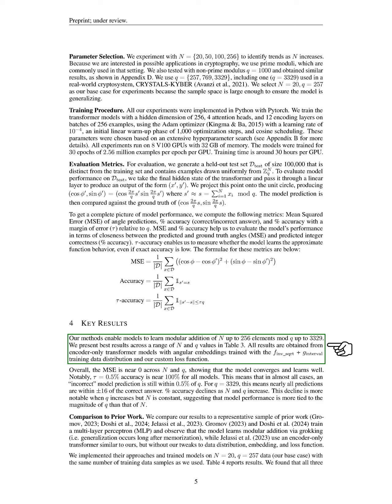Our key results show that our methods allow models to learn modular addition of up to 256 elements with modulus values as high as 3329. We present the best results across various sizes and moduli in a table. All results come from encoder-only transformer models trained with specific data distributions and a custom loss function. Overall, the MSE is close to zero across different sizes and moduli, indicating that the model learns effectively.